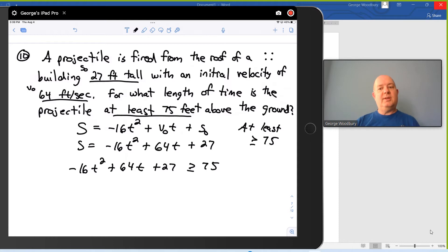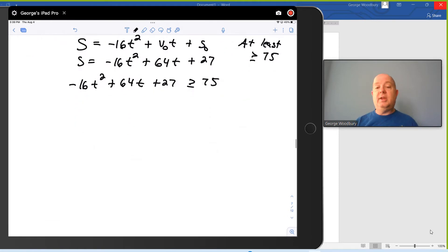Now, when we were doing these to find when is it exactly 75 feet tall, we would subtract 75 over to the left-hand side. Let's do that. Let's collect all the terms on the left-hand side by subtracting 75 from both sides. We've got negative 16t squared plus 64t minus 48 greater than or equal to zero.